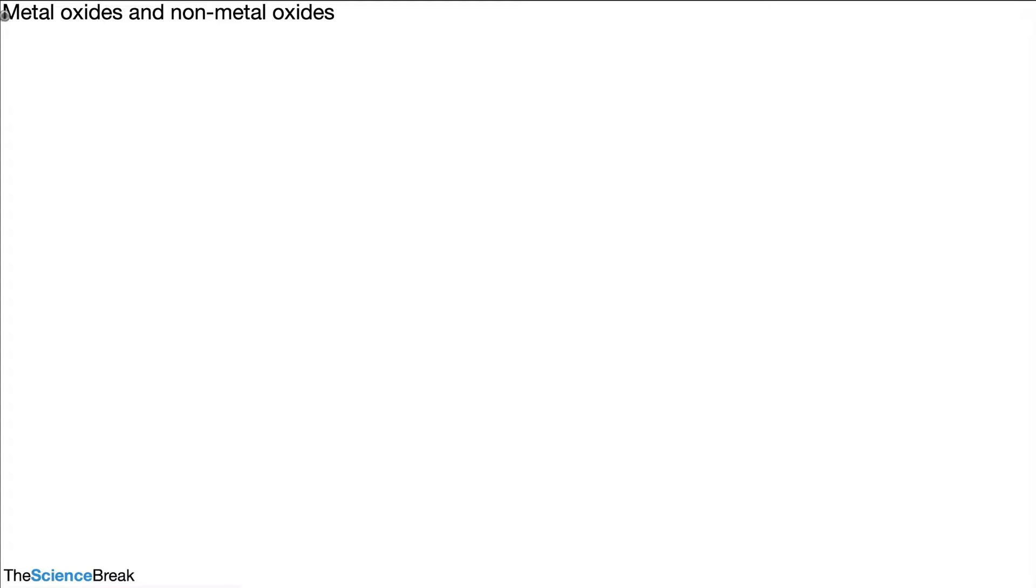Hello and welcome. In today's video we're looking at metal oxides and non-metal oxides. These both have something to do with acids and alkalis. Metal oxides are linked to alkalis and non-metal oxides are linked to acids, and we're going to see exactly how in this video.